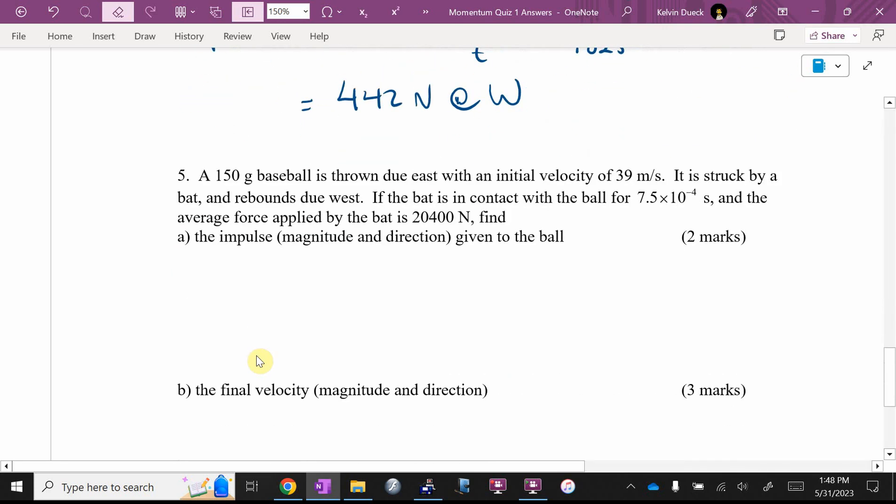Number five, 150 grams, nice try Duick, 0.15 kilograms. Ball is thrown due east with initial velocity of 39, struck by a bat and rebounds due west. I have a change in direction. What that means, Evelyn, is I have to let one way be positive and one way be negative. You let east be negative, so you went like this. You put a plus in front of west there. I think the force is in the west direction. It must be because the ball ended up going west. So I think that would be positive.